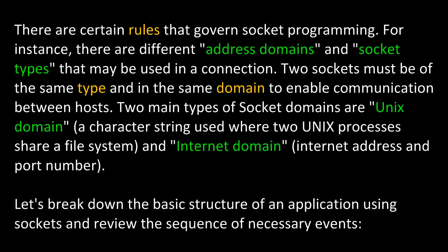There are certain rules that govern socket programming. For instance, there are different address domains and socket types that may be used in a connection. Two sockets must be of the same type and in the same domain to enable communication between hosts. Two main types of socket domains are UNIX domain, which is a character string used where two UNIX processors share a file system, and internet domain, which is an internet address and a port number.